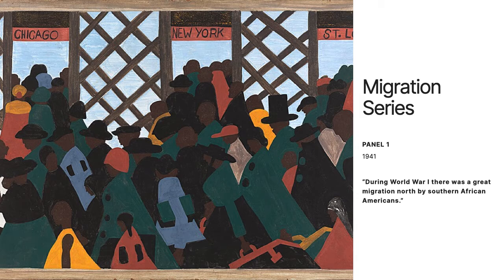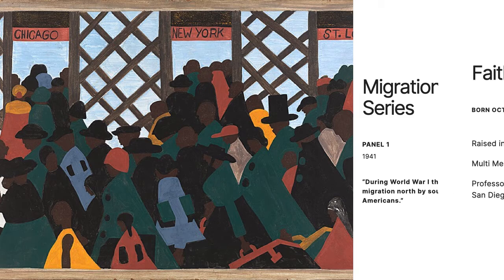Accompanying each panel is a one-sentence description. These were updated in 1993 because some of the language had fallen out of use. The figures in these works are often two-dimensional rather than the common three-dimensional. Each one focuses on both the struggle that the migrants underwent, but also the hope that awaited them at the end of their journey.